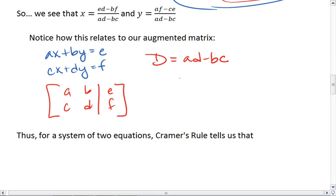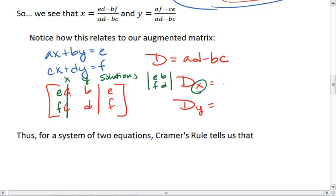There's also a way to solve for the determinant of the matrix with respect to x and the determinant of the matrix with respect to y. The way we solve for the determinant of the matrix with respect to x is we take out, so we have three columns here: x, y, and solutions. If it's with respect to x, we take out the x column and we put the solutions column in its place. So instead, we're going to find the determinant of E, B, F, D, which in this case equals ED minus BF.